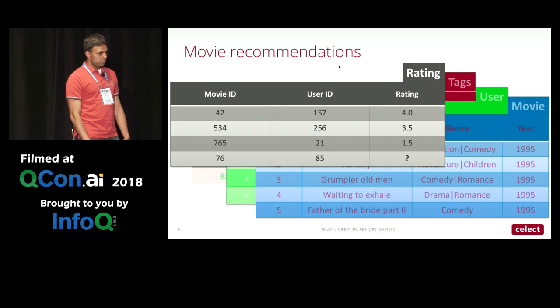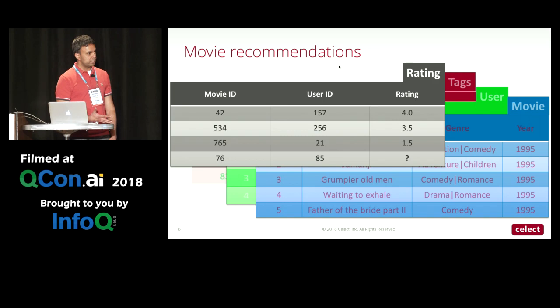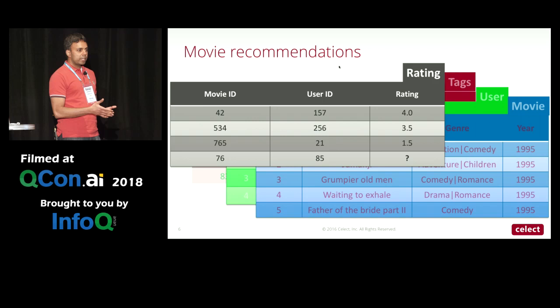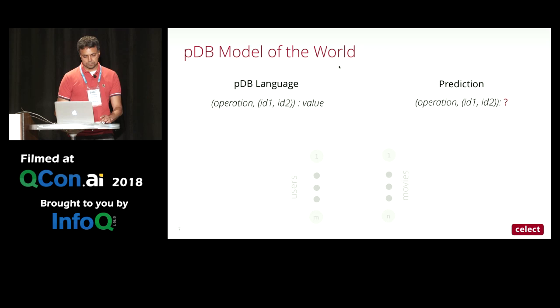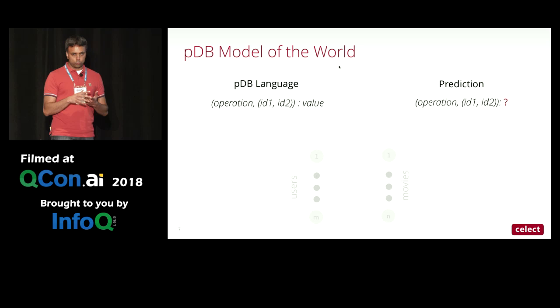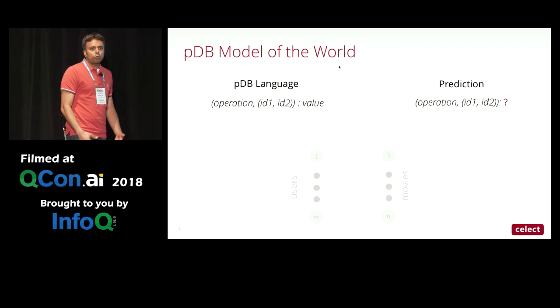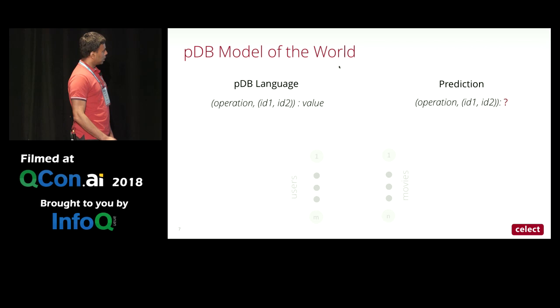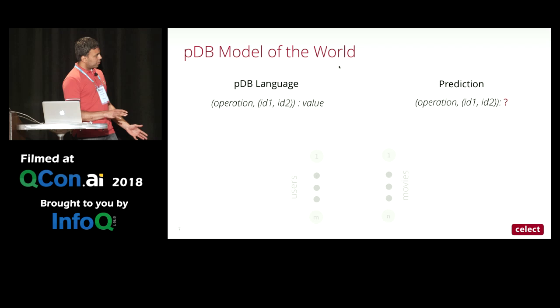The PDB abstraction models every cell in this Excel file as a key-value pair. The value is whatever happens to be in that cell — if it's an image or text, it's a vectorized form. The key always consists of two components: an operation, which tells us what kind of data or relationship we're modeling, and a pair of IDs — ID1 and ID2 — which refer to the entities in our dataset.